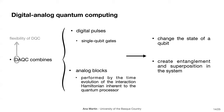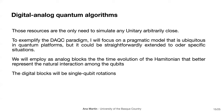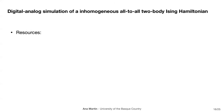Digital-analog merges the flexibility of digital quantum computing with the robustness of analog simulation — letting the qubits interact among each other. These two resources, single-qubit gates and analog blocks, are the only things needed to simulate any unitary arbitrarily closely. To exemplify this paradigm, I will focus on a model ubiquitous in quantum platforms, using as analog blocks the time evolution of the Hamiltonian representing the natural interaction between qubits, and as digital blocks single-qubit rotations around the x-axis.